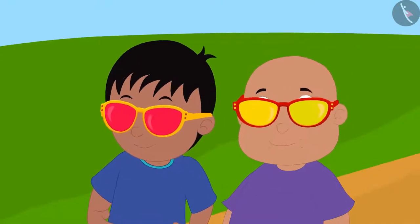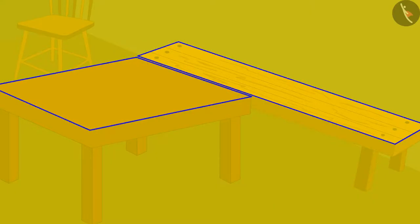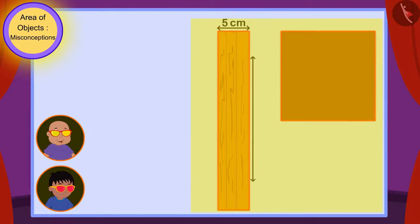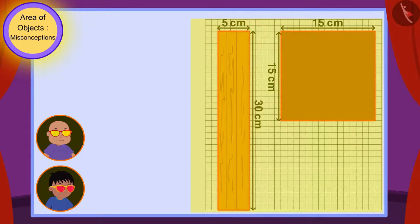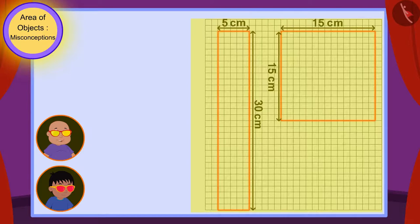Then, Babalu saw the surfaces of those tables with his glasses. Raju, on looking through my glasses, I am able to see a grid paper being formed on the surfaces of these tables. We can find the area of the surfaces of these tables with the help of these. Babalu said excitedly.